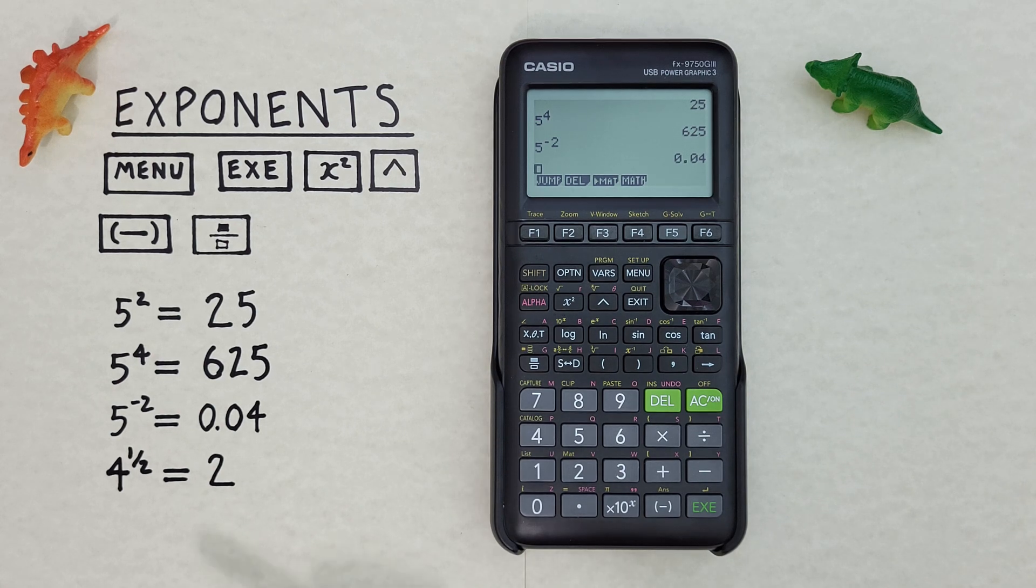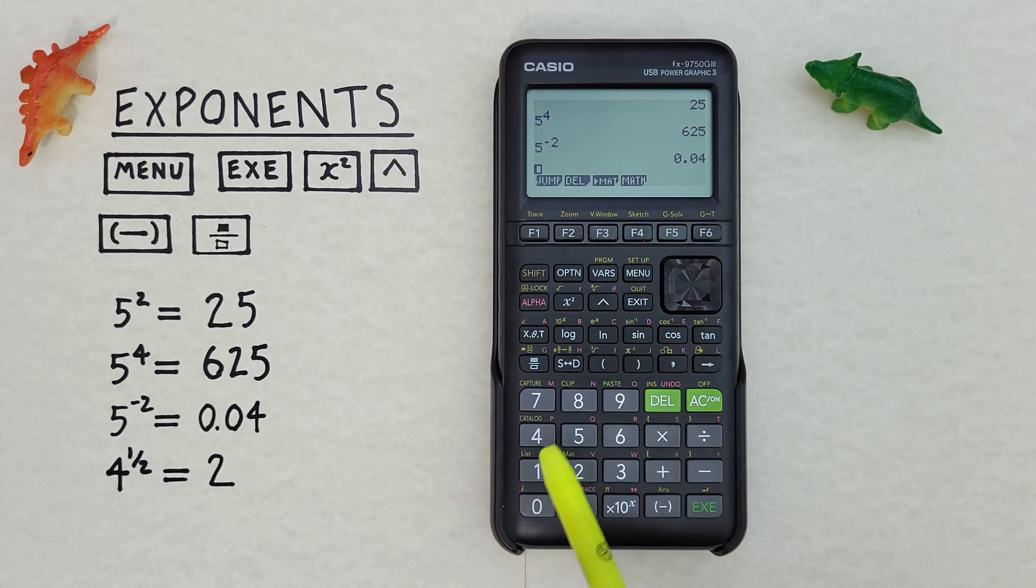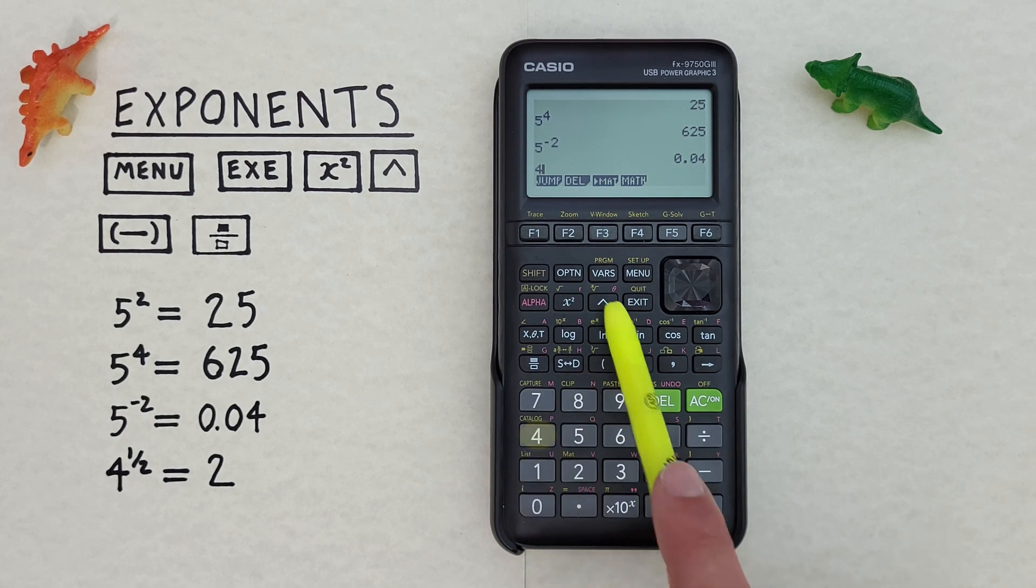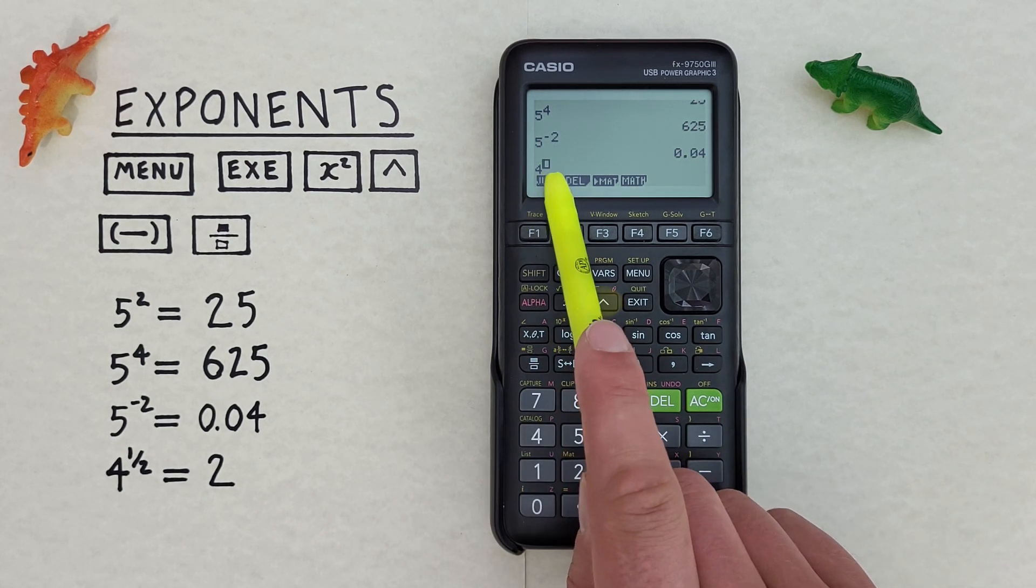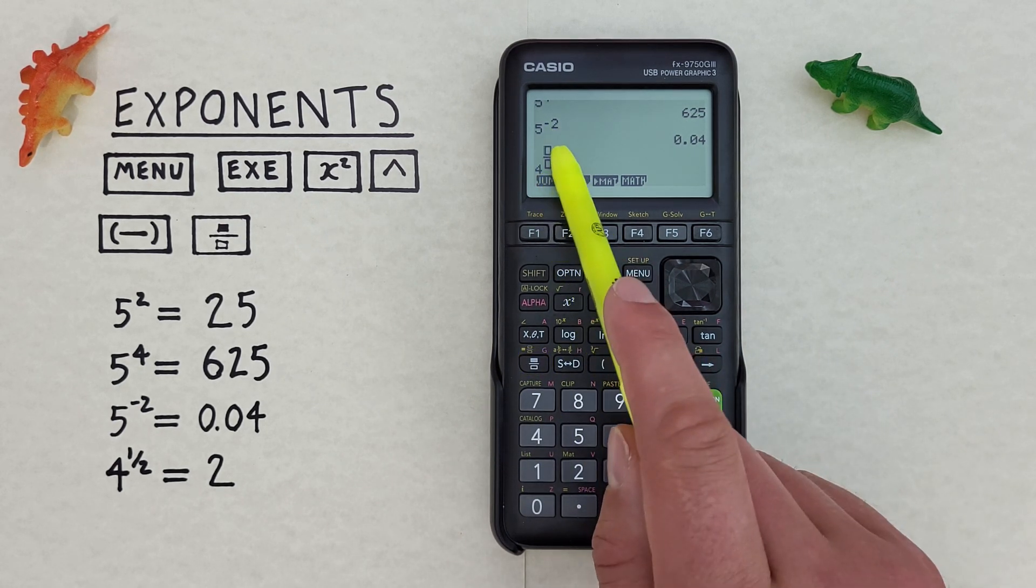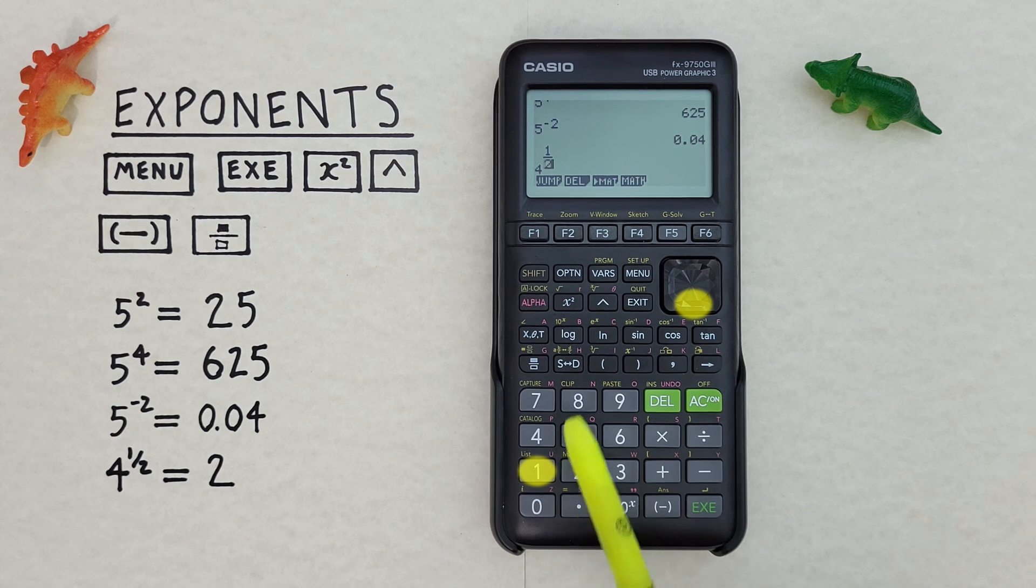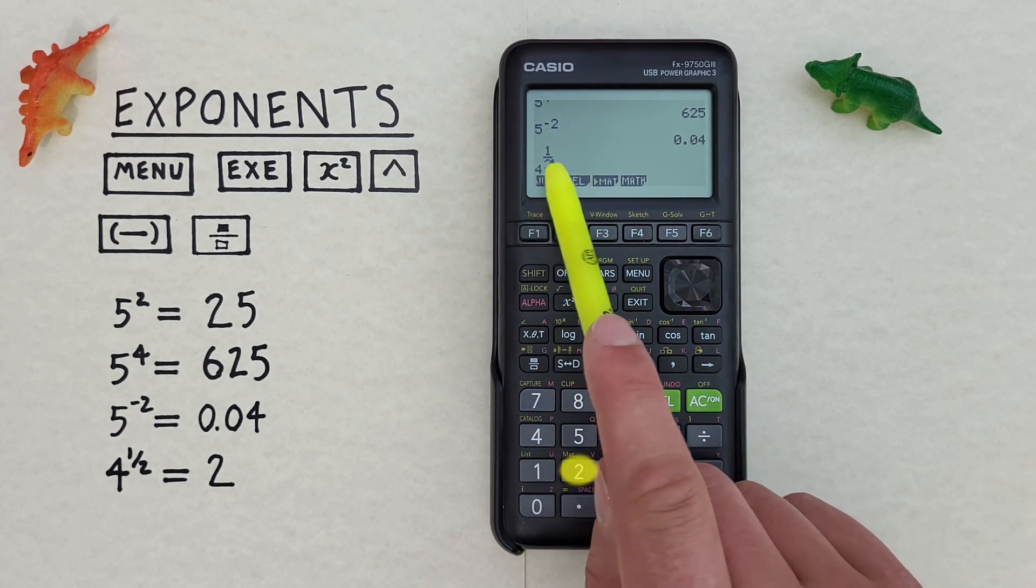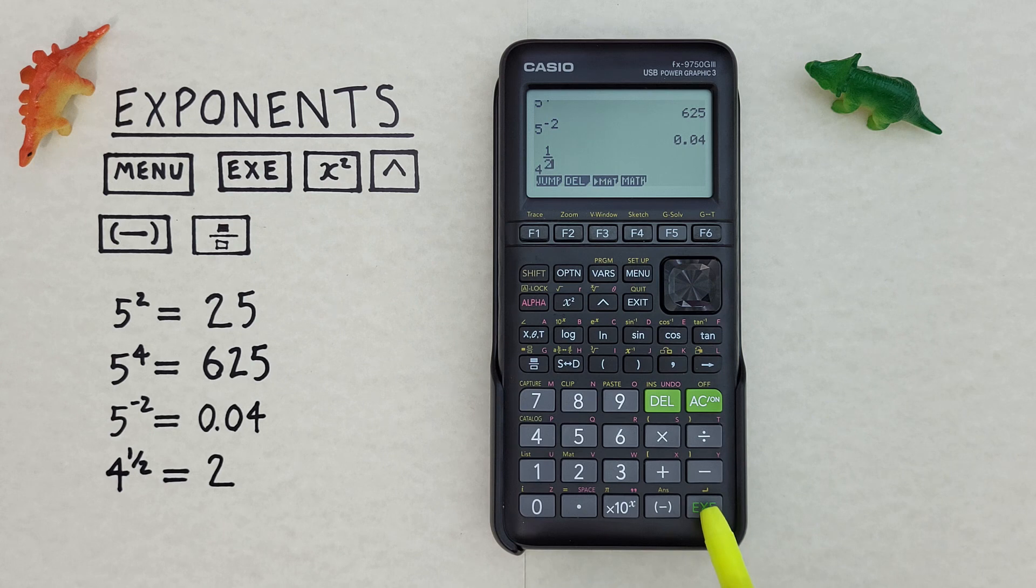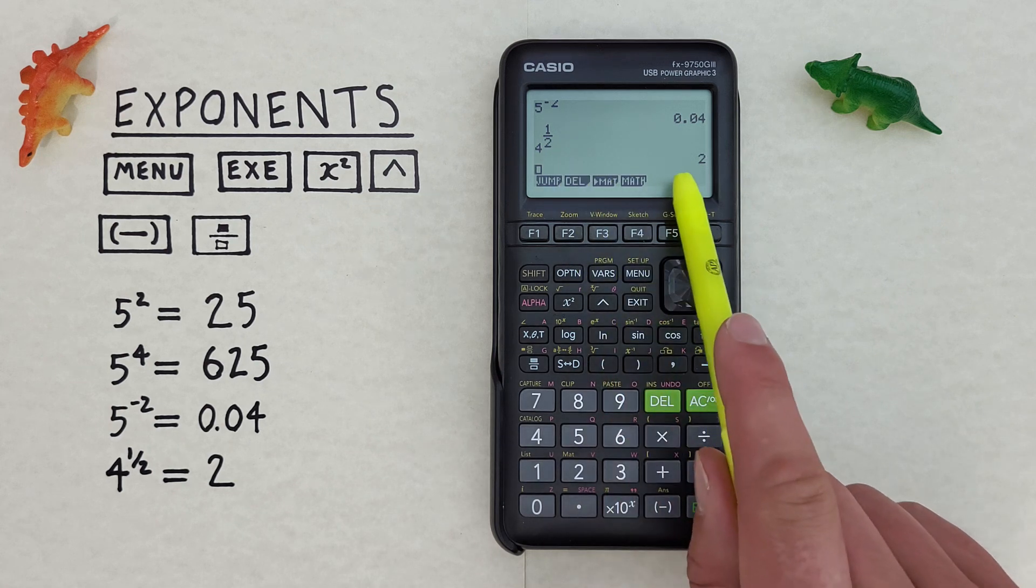What if we have a fraction in the exponent position? Like for example, 4 to the power of 1 half, or 1 over 2. To do that we use the caret key again, and the fraction key. So we start with entering our 4, and then the up arrow or caret key. There's our exponent box, and then we can press the fraction key. That gives us 2 boxes as a fraction. So we have 1 over 2, so we go 1, scroll down, 2. There we have 1 over 2 on our exponent position, and we can press exe, and we get a result of 2. So 4 to the power of 1 half is equal to 2, which is correct.